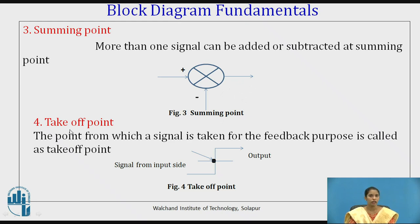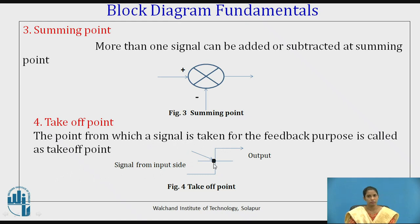Next is the take off point. Take off means we are taking a point — in this context, we take a signal from the system and give it back or forward it to some other point. The point from which a signal is taken for feedback purposes is called the take off point. The black dot in figure 4 is a take off point. This take off point is shifted according to the requirement of block diagram construction. The main aim of block diagram reduction is to convert a complicated system into a simple single block for easy analysis.